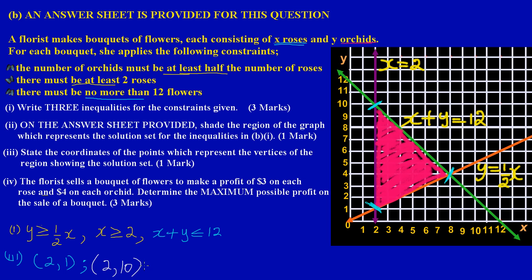For the third and final vertex: coming down to the x-axis gives x = 8, and going across to the y-axis gives y = 4. So the third coordinate is (8, 4). That's part three — just state the three coordinates: (2,1), (2,10), and (8,4).